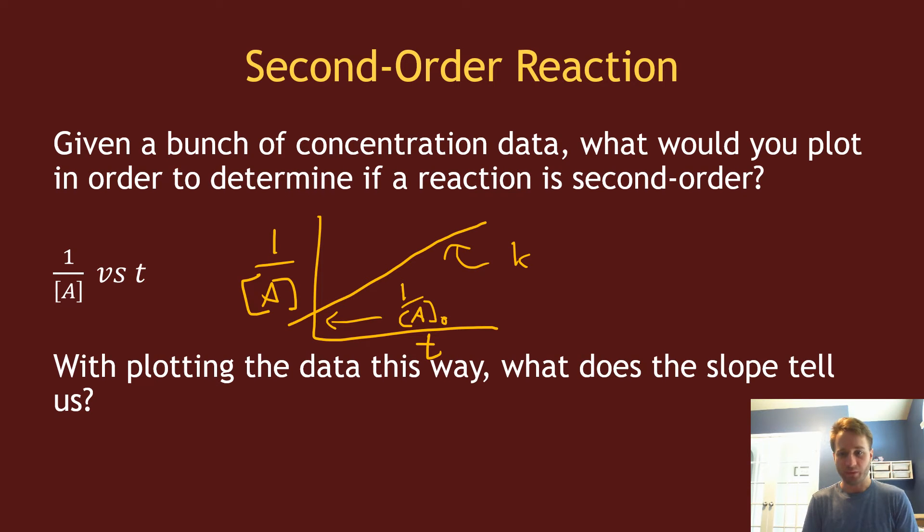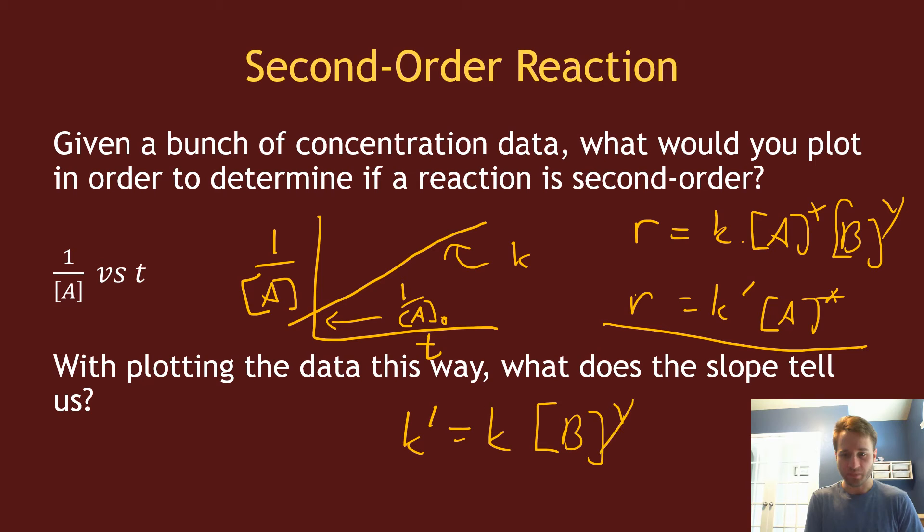If my rate law was rate equals k[A]^α[B]^β, and I have excess of B, then my rate is effectively some k'[A]^α. The slope that you get out, that k', that slope that you measure from looking at this type of rate law expression, would just equal the actual rate constant times concentration of B to some power.